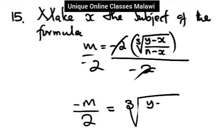So this cancels, meaning negative m over 2 is equal to y minus x over n minus x. I want to use the table — you may wonder why the negative sign appears here.